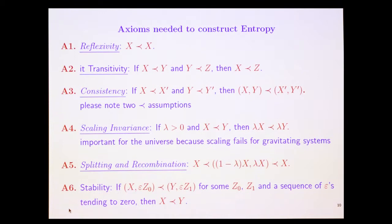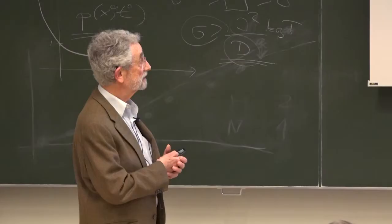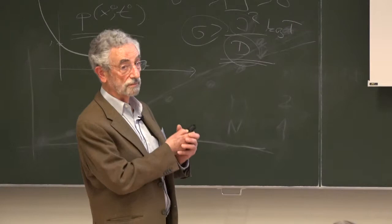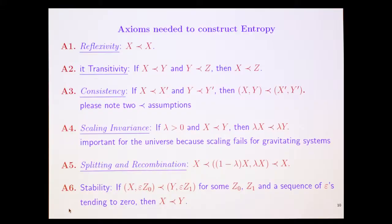A3: Consistency. If you can go from x to x prime and y to y prime, two different systems, then you can go from the pair x,y to the pair x prime, y prime. That's easy, but that's not additivity. That's only partial additivity. That is to say, what is interesting is that you can go from x,y to x prime, y prime, with x prime entropy going down and y prime going up enough. That's what's interesting. But here the assumption is only if they both can do it.